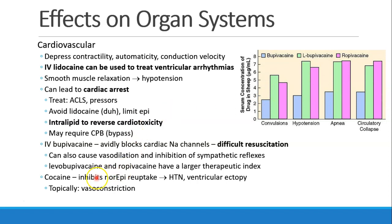Cocaine also has cardiovascular effects. It inhibits reuptake of norepinephrine, so this excess of norepinephrine causes hypertension and ventricular ectopy. Cocaine can also be given topically, like in the nose, to cause vasoconstriction, and you may see that in, for example, an ENT room.